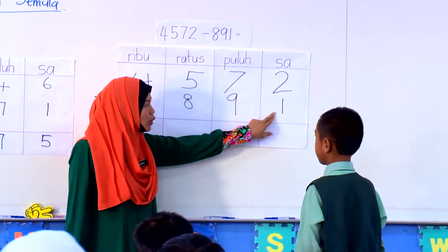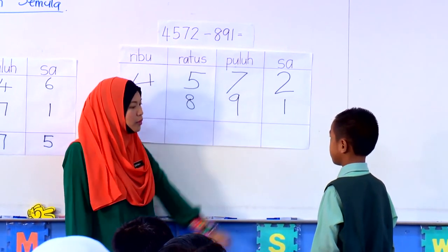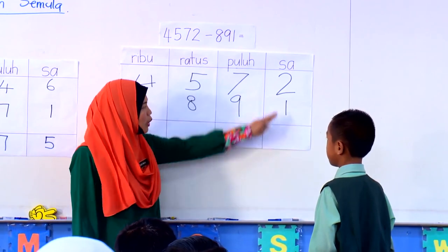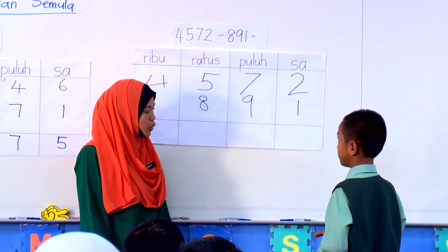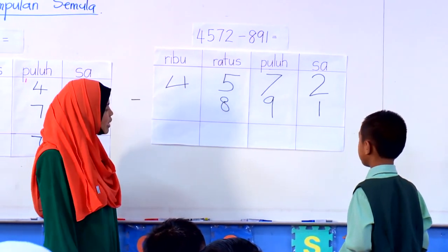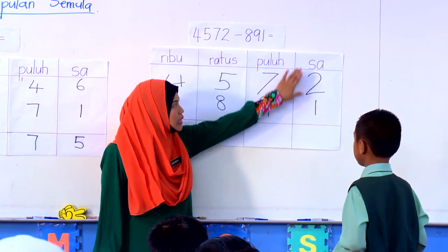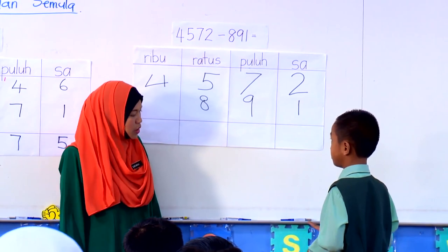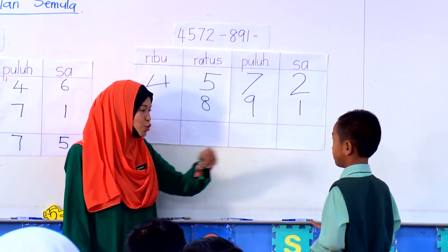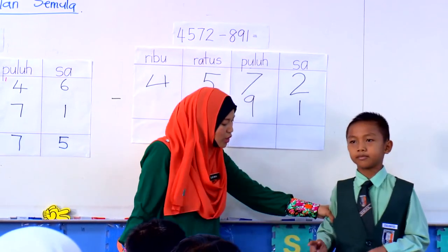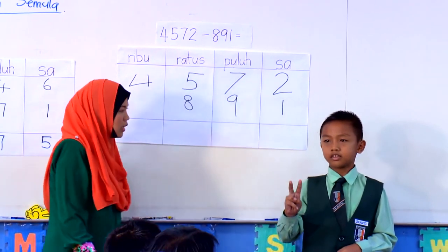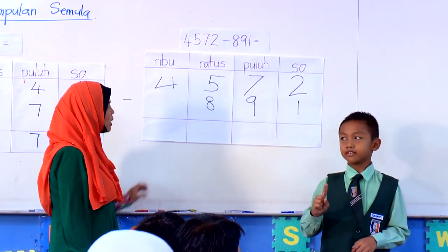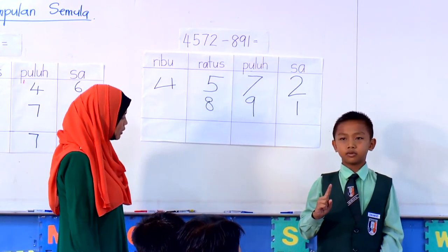Sekarang, Zuhafizi, 2 dengan 1 ini boleh tolak tak? Tunjukkan pada saya menggunakan jari kamu, macam mana kamu nak menolak 2 dengan 1. Keluarkan jari berapa? 2. Kemudian? Tolak 1 — tunjuk dekat kawan awak. Tolak 1, nak tutup berapa jari? 1. Tunjukkan pada kawan awak. Tolak 1, maka berapa jawapan yang tinggal? 1. Sila tuliskan.